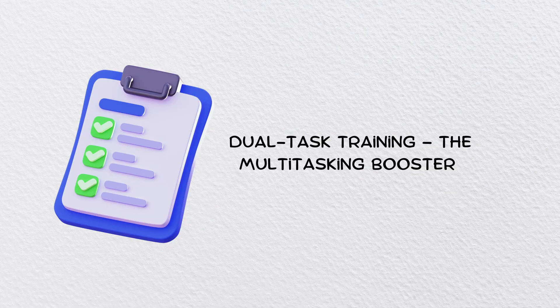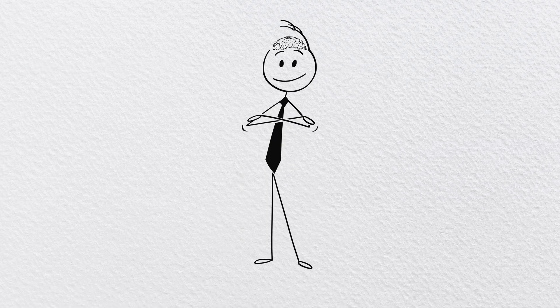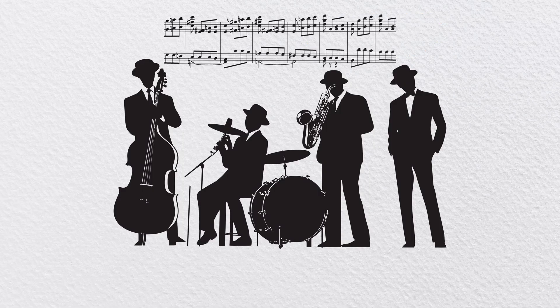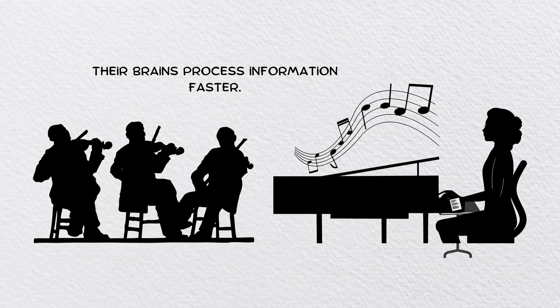Dual task training: the multitasking booster. Most people think multitasking is bad, but when done right, it can actually sharpen your brain. A study at the University of Illinois found that musicians who play an instrument while reading sheet music develop better cognitive flexibility. Their brains process information faster.